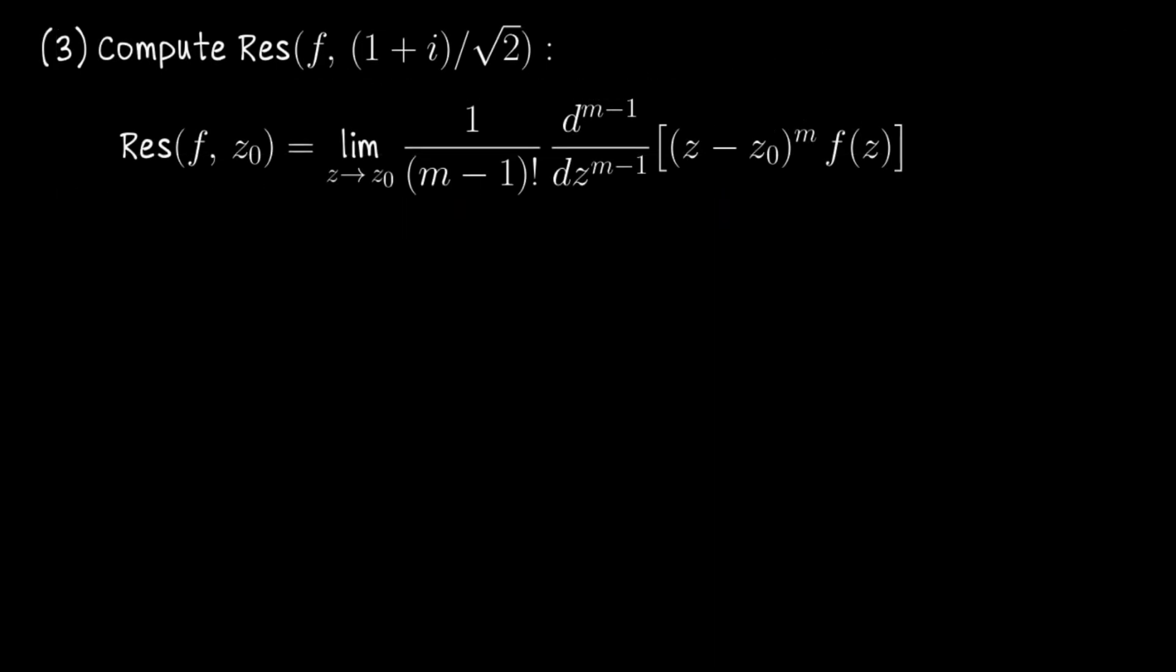We'll do them one at a time. Let's start with the residue of f at z naught that's the pole in the first quadrant. I've put the entire expression here how you compute residue but this will simplify in just a minute. So it's going to be the limit as z approaches z naught of this expression which is written in terms of this letter m or this index m where m is the order of the pole. That's how many times the pole appears in the full factorization of our denominator. Our poles were all simple which means that m equals one for each.